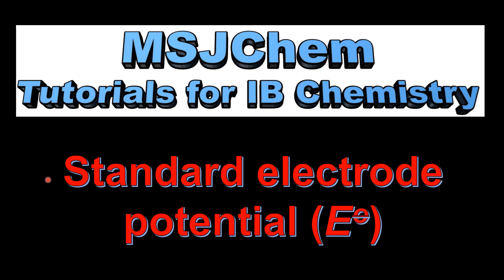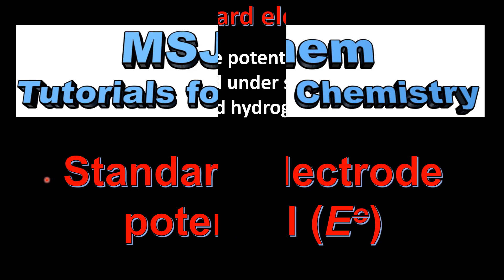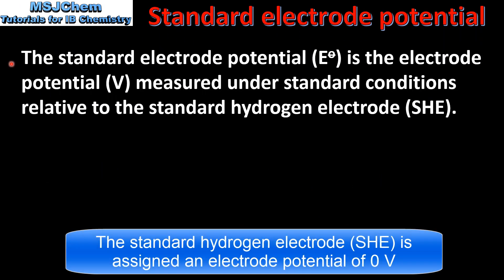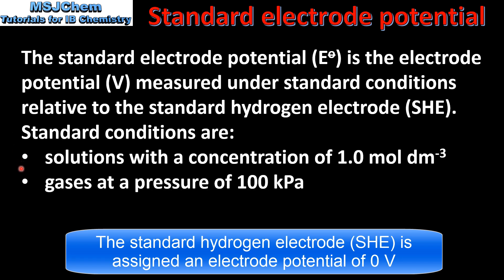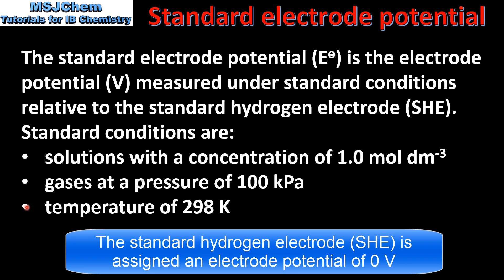This is MSJChem. In this video I'll be looking at the standard electrode potential. We'll start with a definition. The standard electrode potential is the electrode potential in volts measured under standard conditions relative to the standard hydrogen electrode. Standard conditions are solutions with a concentration of 1 mole per decimeter cubed, gases at a pressure of 100 kilopascals and a temperature of 298 Kelvin.